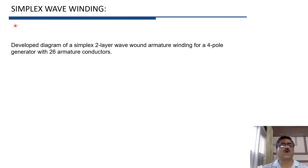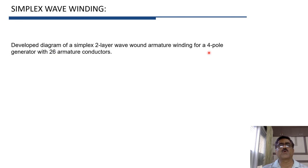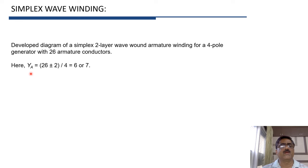We will now draw the developed diagram of a simplex 2-layer wave wound armature winding for a 4-pole generator with 26 armature conductors. Here, number of conductors Z = 26 and number of poles = 4. First, let us calculate YA to check whether the winding is possible or not.